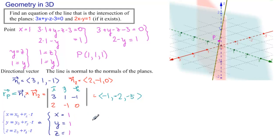And then we write the directional vector, minus 1 times T, minus 2 times T, and minus 5 times T. And cleaning this up, we have X equals 1 minus T, Y equals 1 minus 2T, and Z equals 1 minus 5T. And that's an answer to our problem.